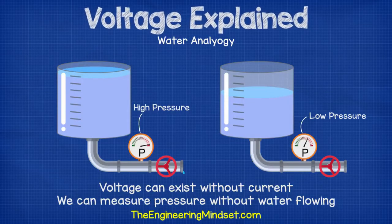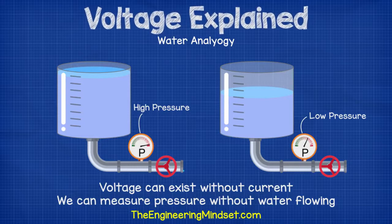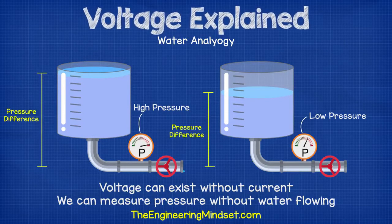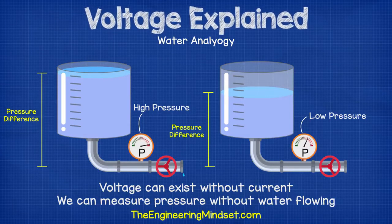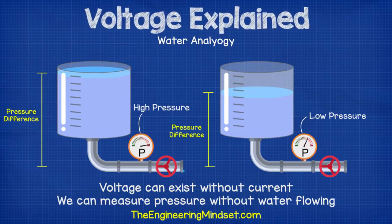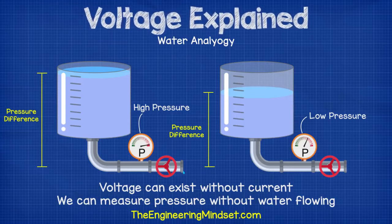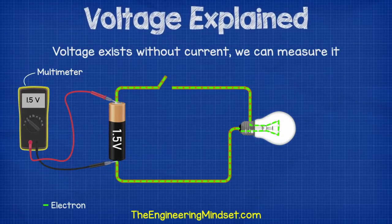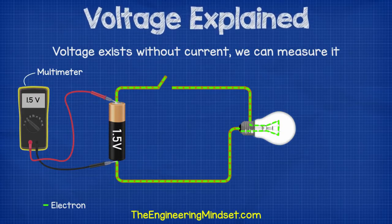Voltage can exist without current. This is important. For example, we can measure the pressure in the pipe with a valve shut, with no water flowing. Then we can calculate the difference between the two pressures, and this is what we consider the difference of pressure. The same happens with electricity.